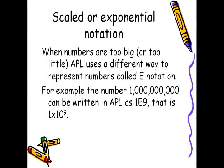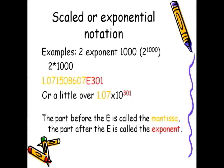Scaled or exponential notation. When numbers are too big or too small, APL uses a different way to express numbers called e-notation — it's engineering notation. For example, the number 1 billion can be written in APL as 1e9, that is 1 times 10 exponent 9. Another one: 2 exponent 1000 is over 10 exponent 301. The part before the e is called the mantissa, and the part after the e is called the exponent.